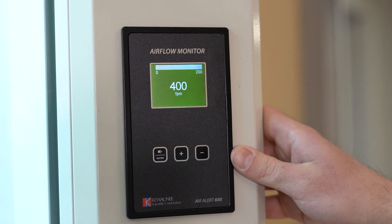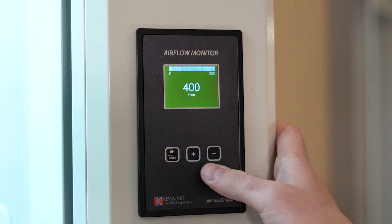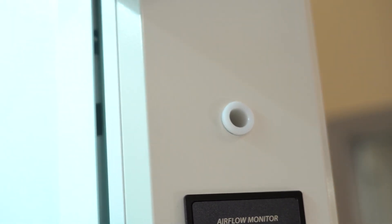The monitor consists of a color display, three control buttons, an inlet above the monitor, and a sensor inside the hood sidewall. This sensor allows the monitor to read the velocity.